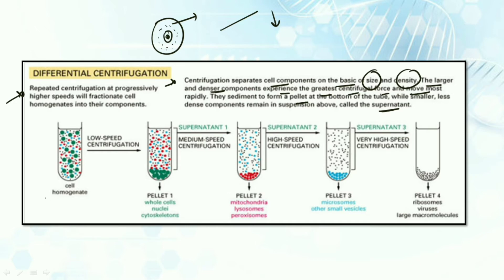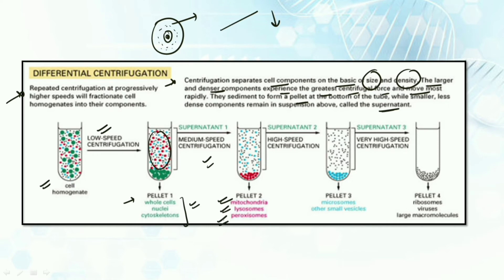In the first step, we have the cell homogenate - a mixture of a sample containing various components of the cell - and we want to separate out those components. In the first step, we use slow-speed centrifugation, which produces the first pellet containing whole cells, nuclei, and cytoskeletons. The supernatant from this step is taken to the next step, where we use medium-speed centrifugation and obtain mitochondria, lysosomes, and peroxisomes in the second pellet.